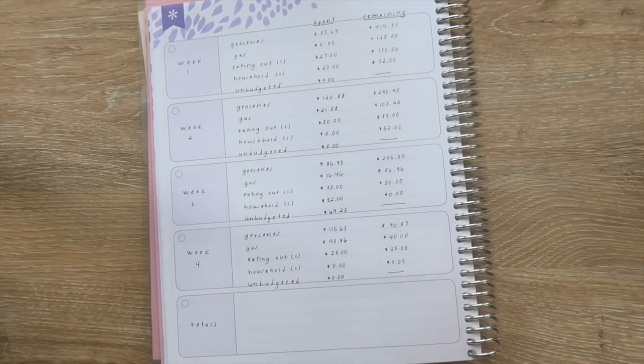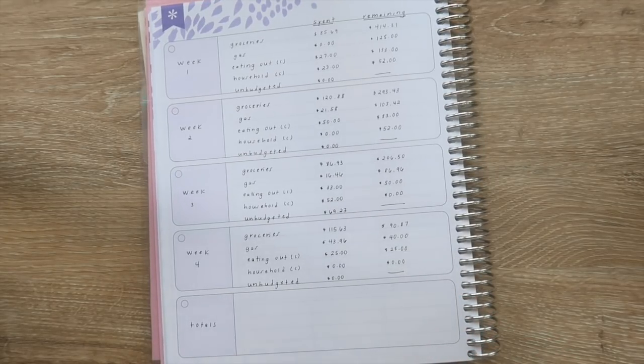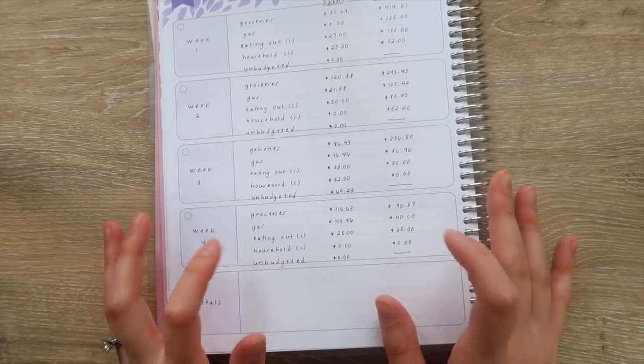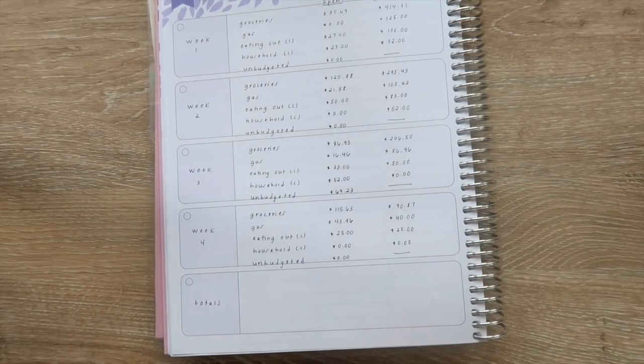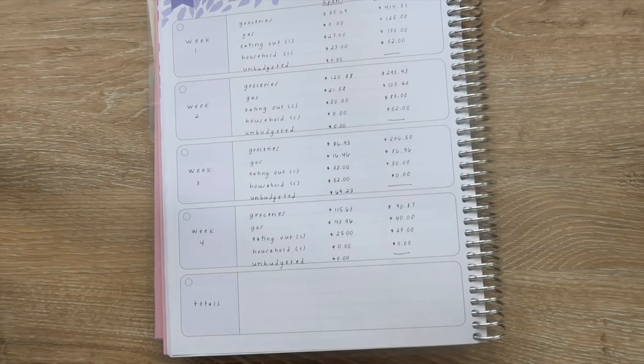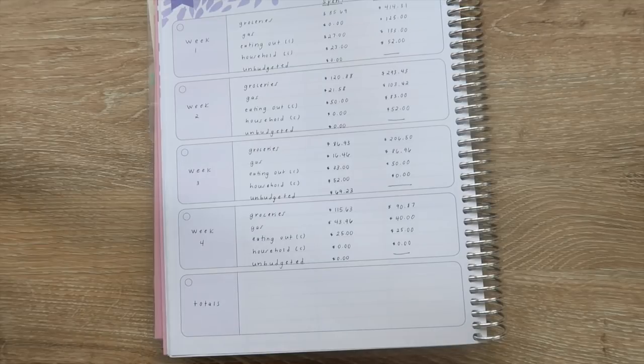We do have a little bit of unbudgeted items for the month so far, but we're doing pretty good. That is my weekly check-in for the fourth week in April. I hope that you guys enjoyed this video. If you have any questions about my process or anything like that, leave them down below and I will see you guys next time. Bye guys.